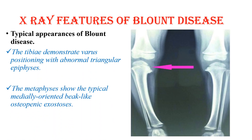The typical X-ray appearance of Blount's disease includes, as seen in the image, the tibia demonstrating varus positioning with abnormal triangular epiphysis, and the metaphysis shows the typical medially-oriented beak-like osteopenic exostosis.